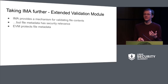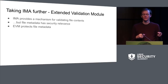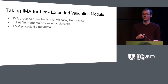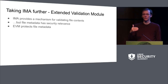EVM protects the file metadata. EVM adds an additional attribute containing either a signature or an HMAC over the metadata. You can configure the kernel to also verify that the EVM attribute corresponds to the other security-relevant metadata of the file. That way, if the metadata is tampered with, EVM will fail to validate; if the file contents are tampered with, IMA will fail to validate.